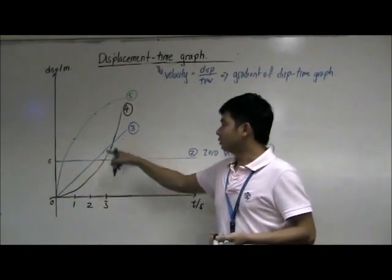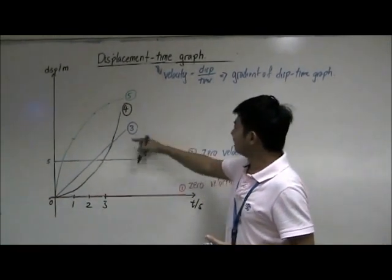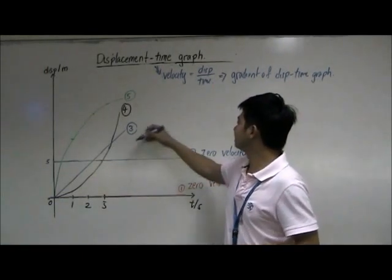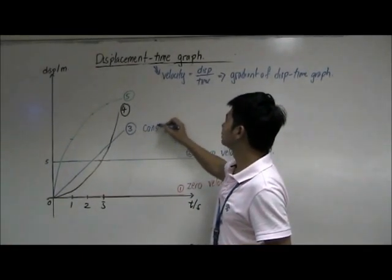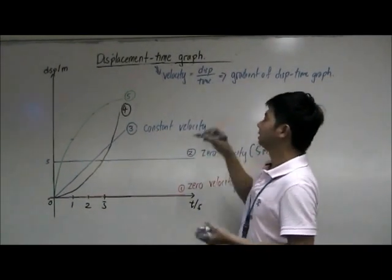Graph number three is a straight line that is angled upwards. In this case, this line has a constant gradient, so we say that this object is moving at constant velocity.